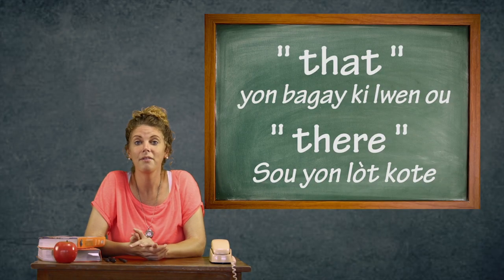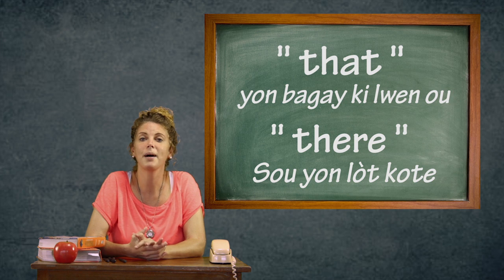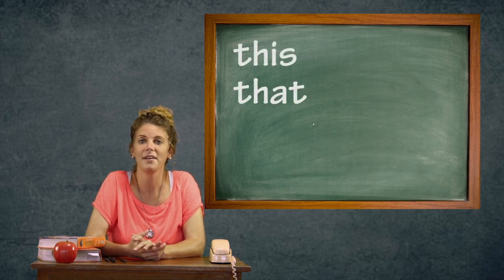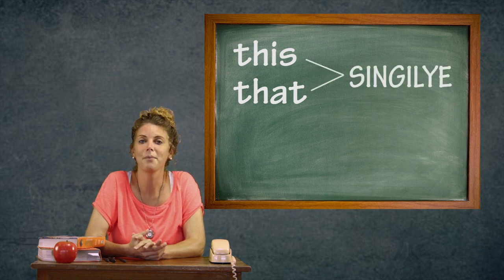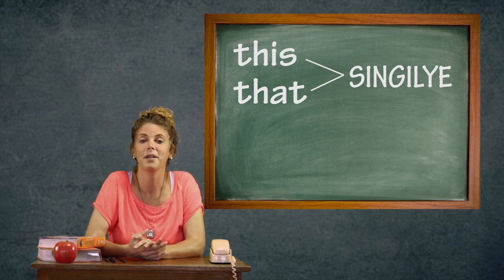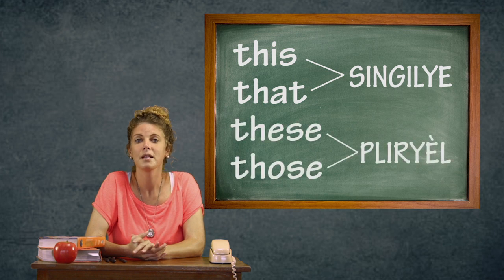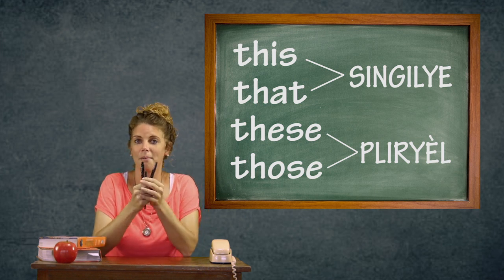Pafwa, ou pral pale sou plis pase yon objè, ou swa plis pase yon moun. Sa vle di ou pa pral sèvi ak "this" ak "that", paske yo itilize pou pale de objè ou swa moun singulye. Gen de lòt mo lè w ap pale sou plizyèl la. Si mwen gen plis pase yon plim, mwen ka di: these are my pens.